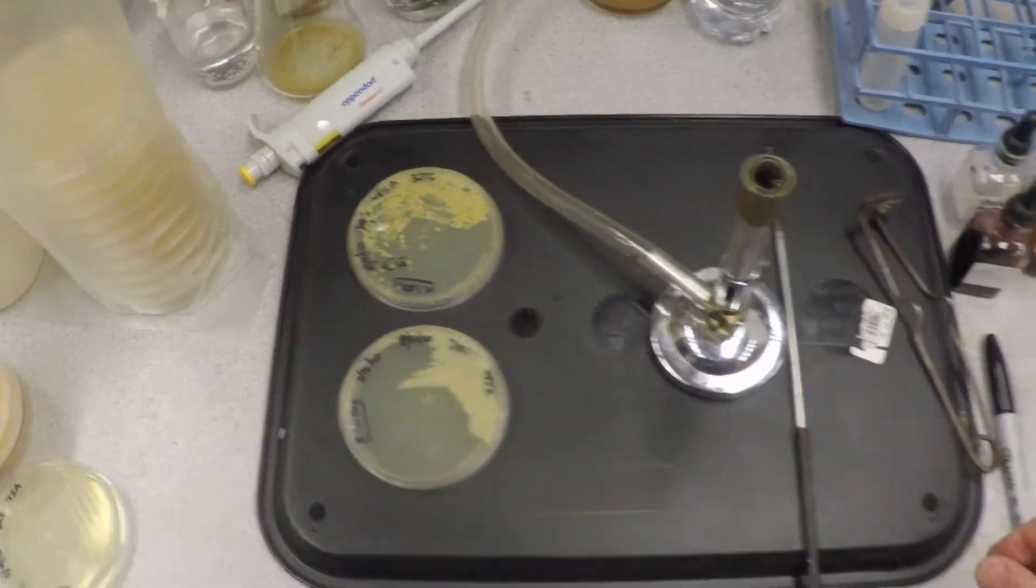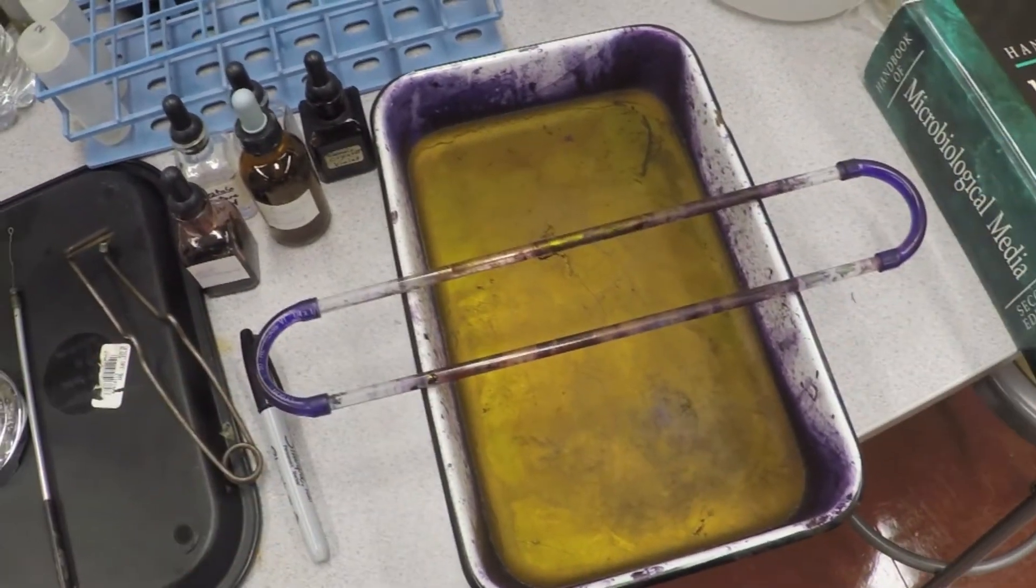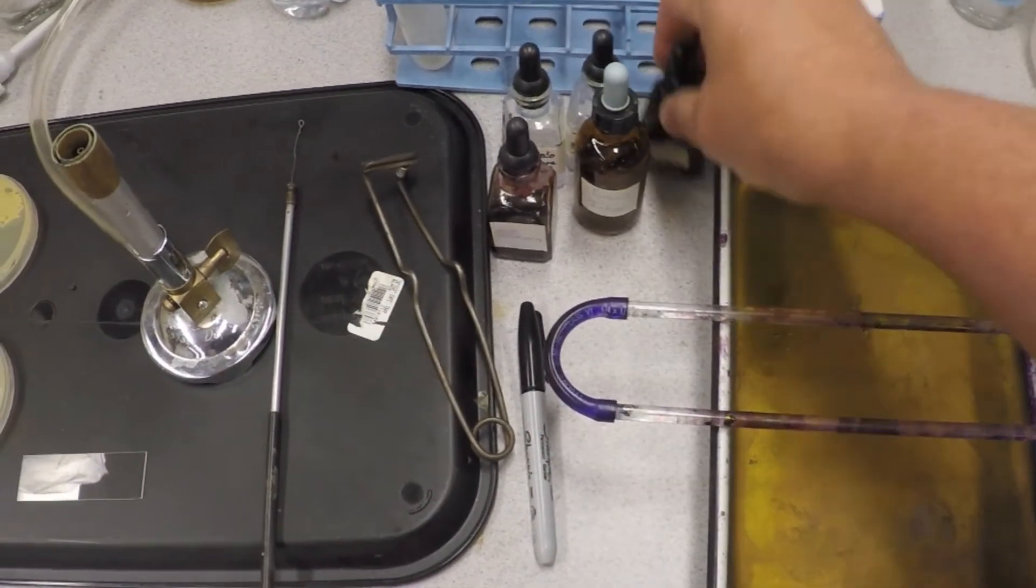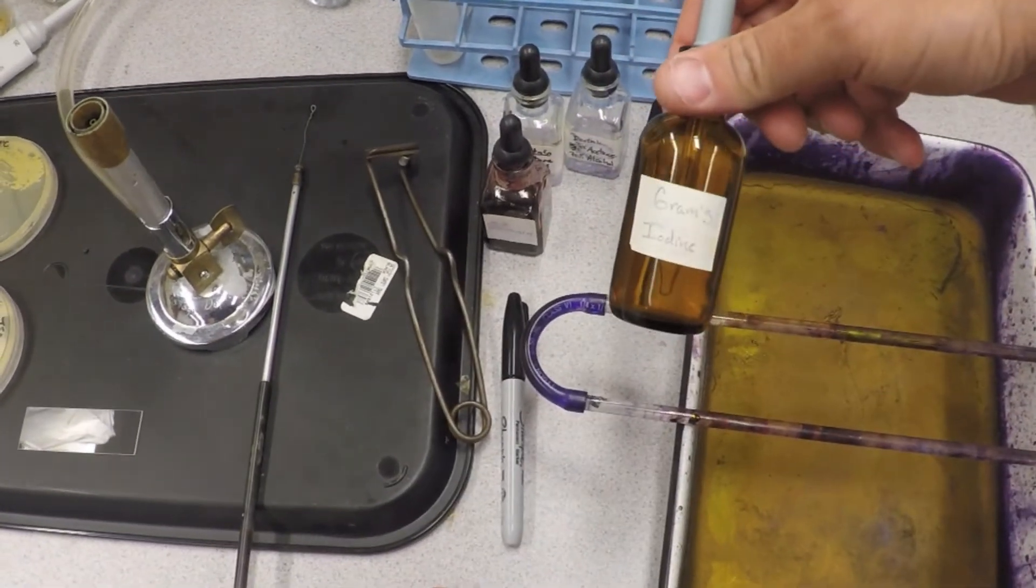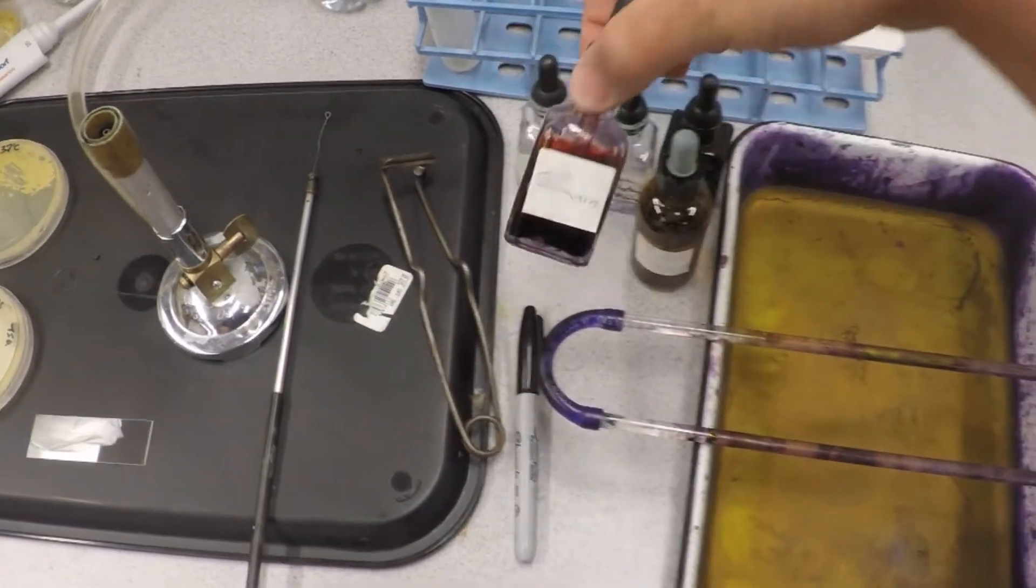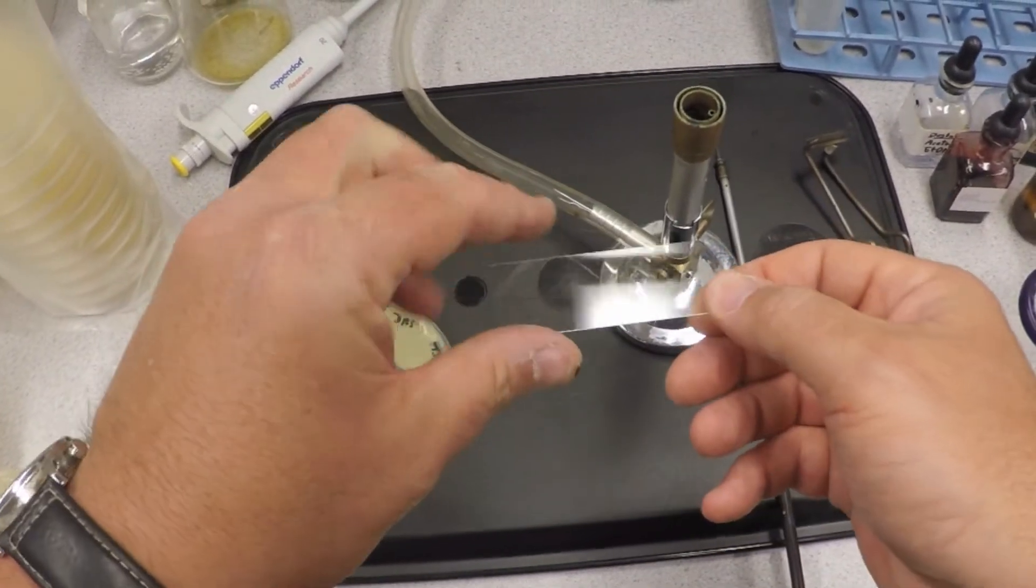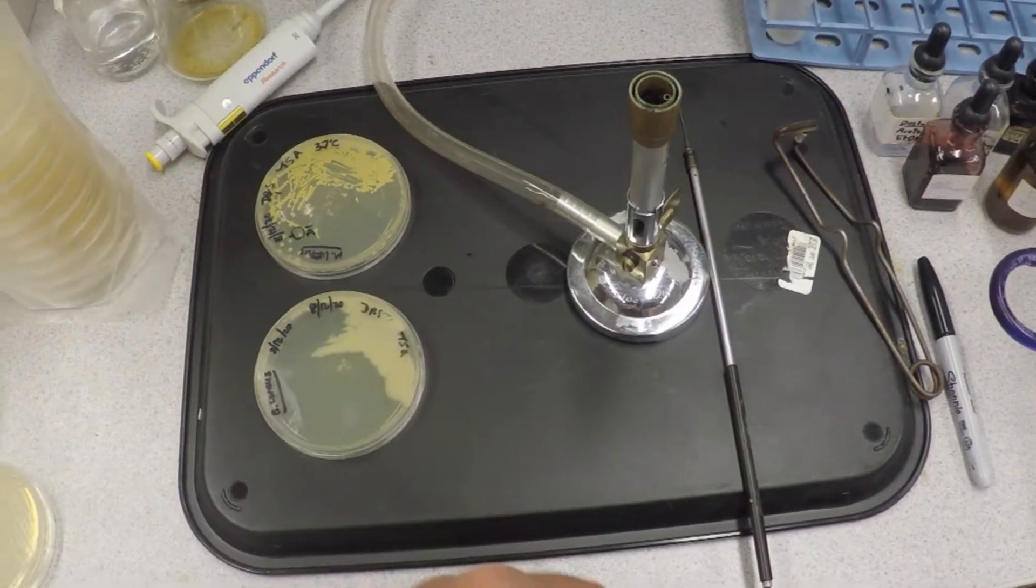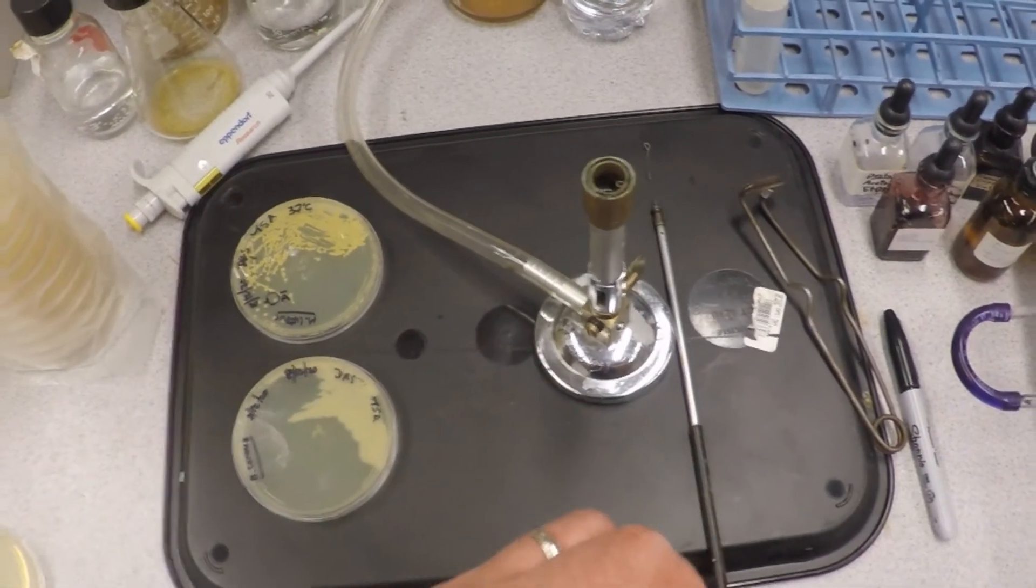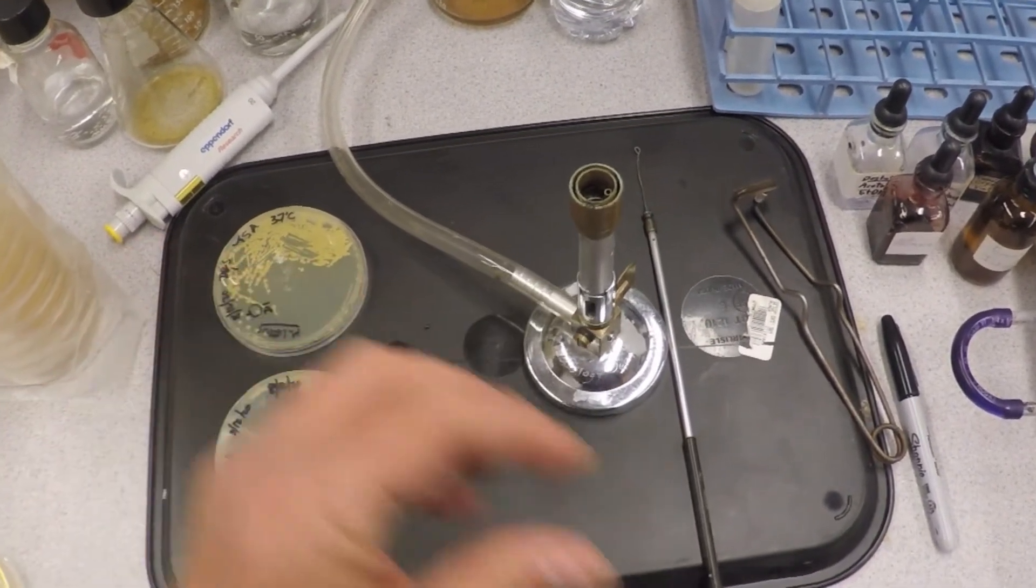You need Gram staining supplies. We've got a tray here with a little homemade rack to put your slide on and let things dry. Here is crystal violet, Gram's iodine, destain solution, and the counterstain safranin. The other thing you need is water and a slide. That slide is really dirty. This is what happens when you're away from the premises for so long.